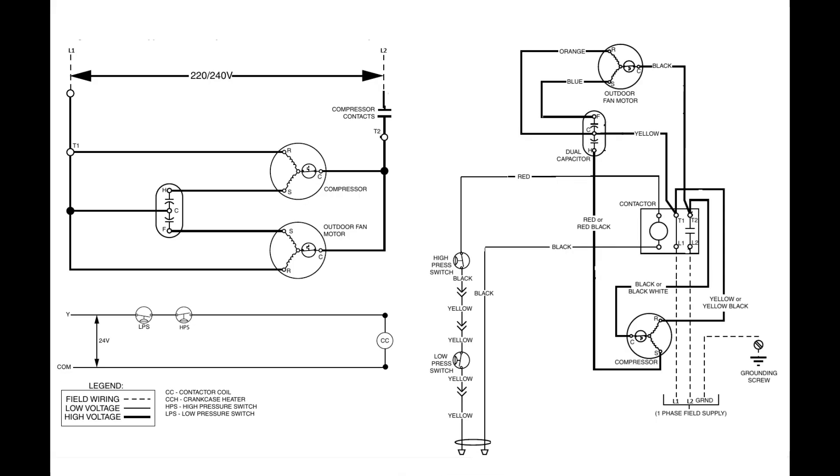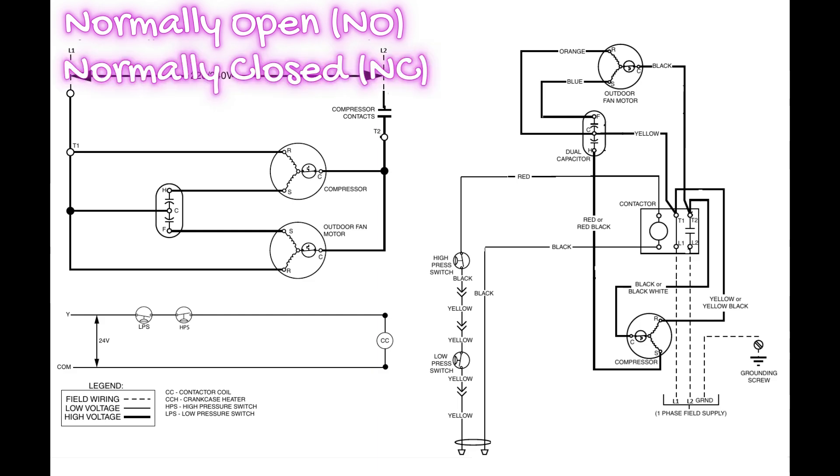Another facet of schematics is that you really want to get a command on switching. So especially in these control circuits, you're going to come across a lot of different types of switches. And it's very important to understand the concept of what normally open and normally closed means. We need to know when these switches are opened and closed so that when we look at a schematic, the way I've been showing you to look at it, we can actually understand where we have power and where we don't based on how these switches are positioned by default.